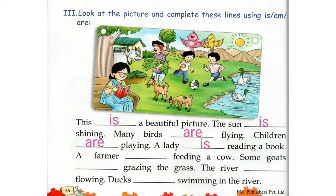A farmer. There is only one farmer. So we will use Is. A farmer is feeding a cow.